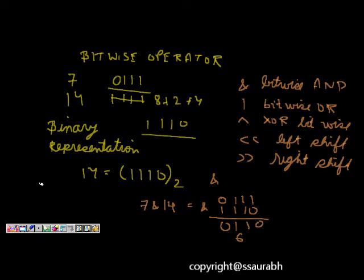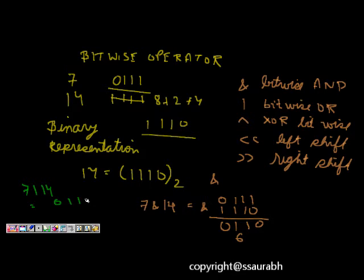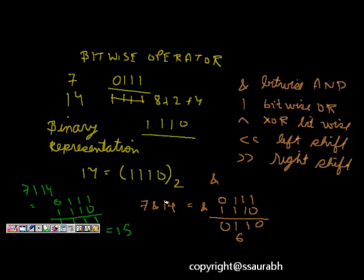Let's take another example: 7 OR 14. 7 is 0111 and 14 is 1110. Performing bitwise OR gives us 1111, which is all 1s, and that equals 15. So 7 | 14 = 15.